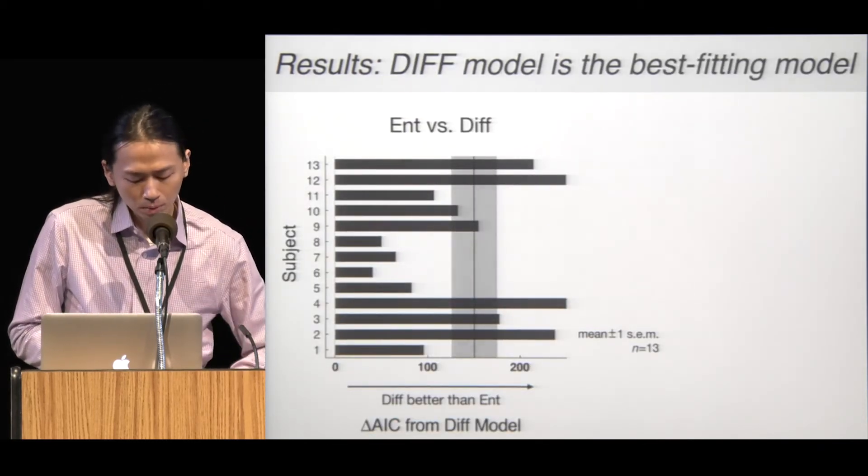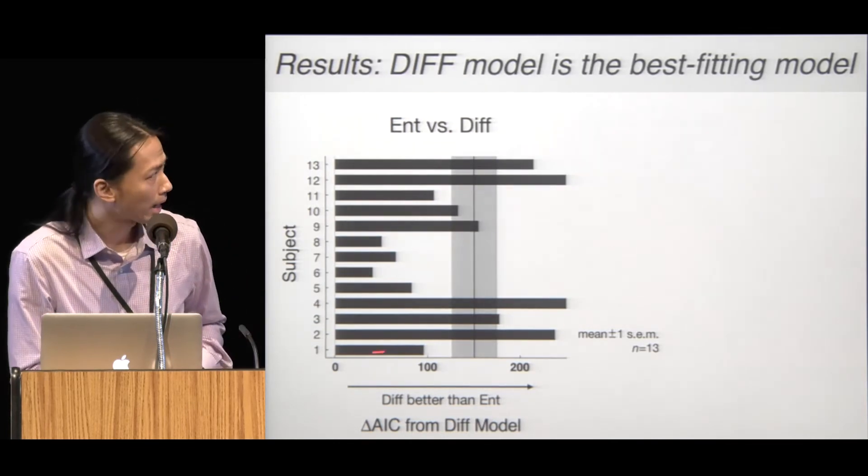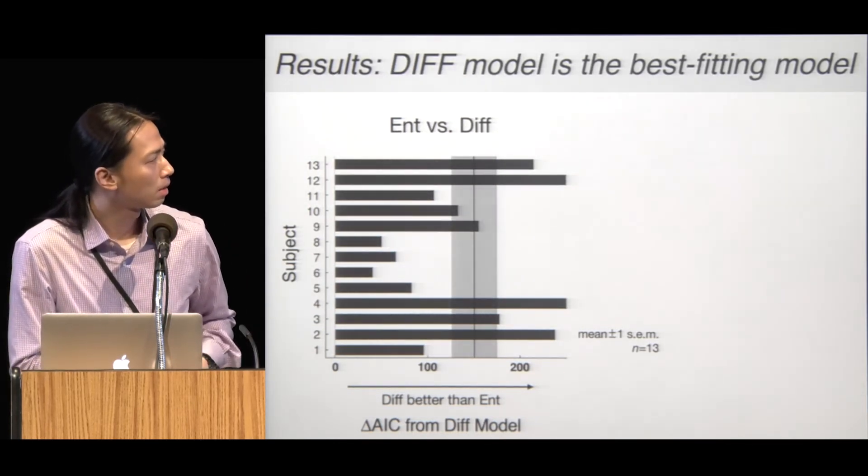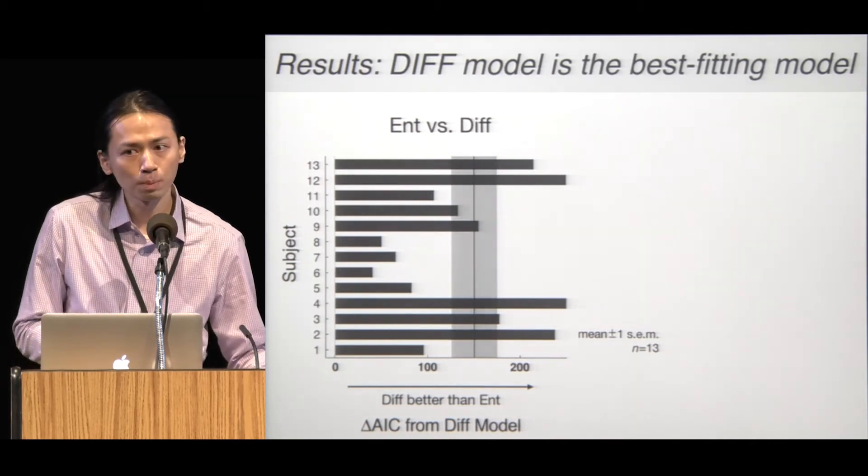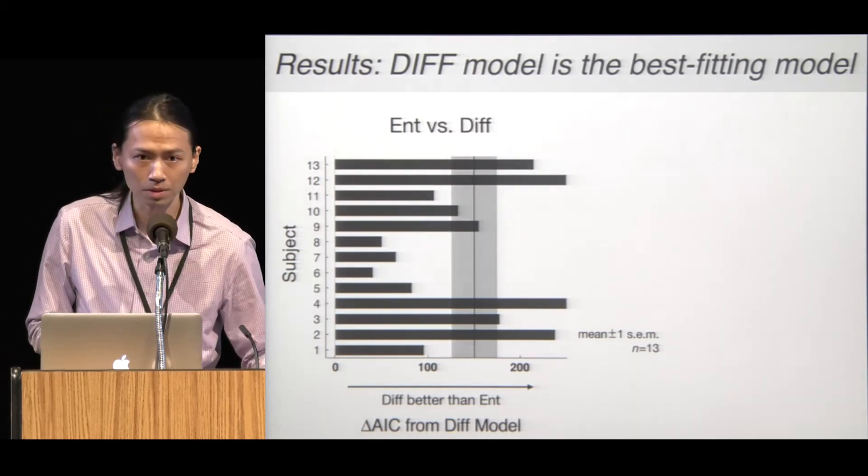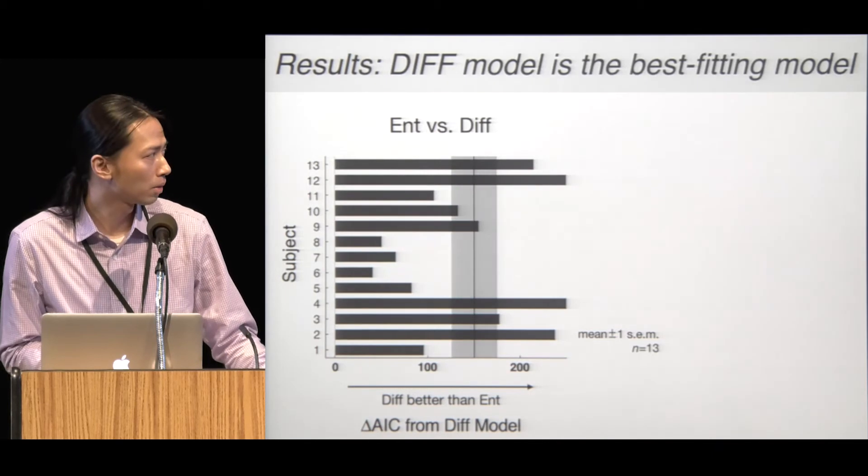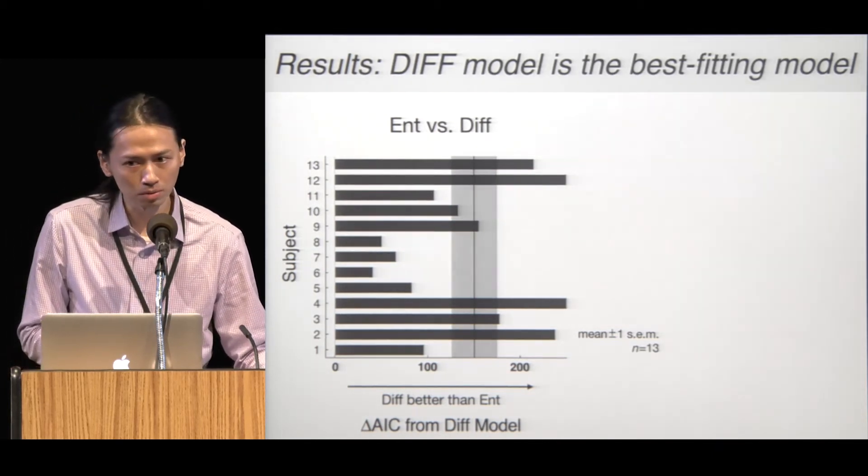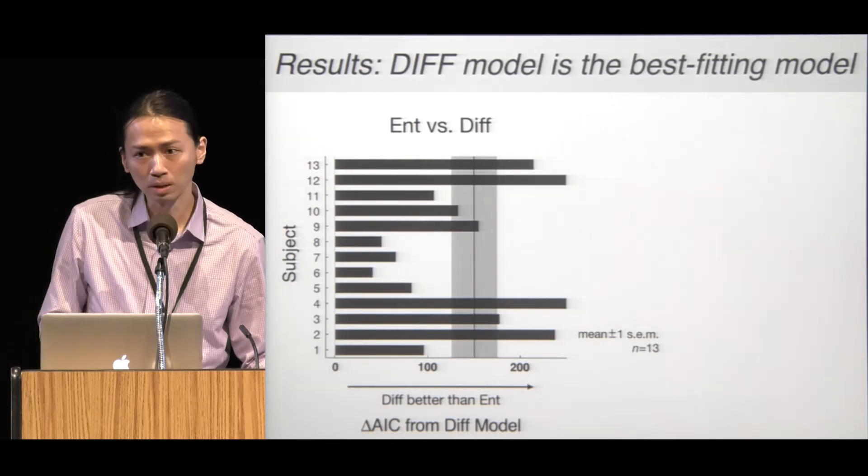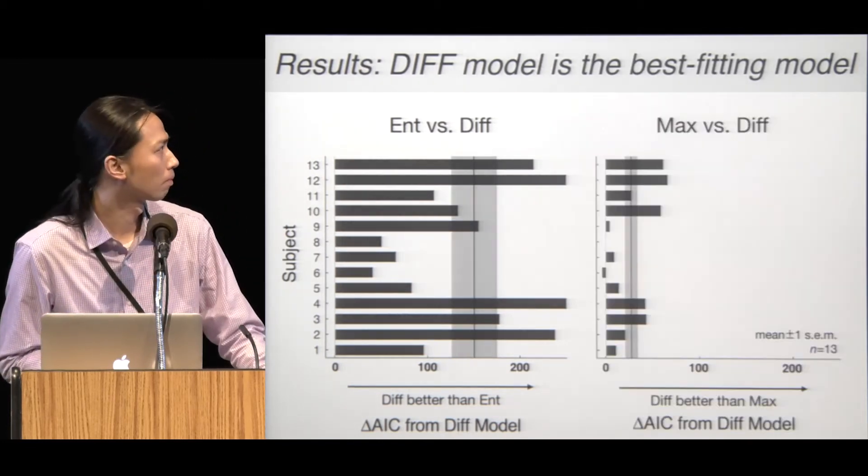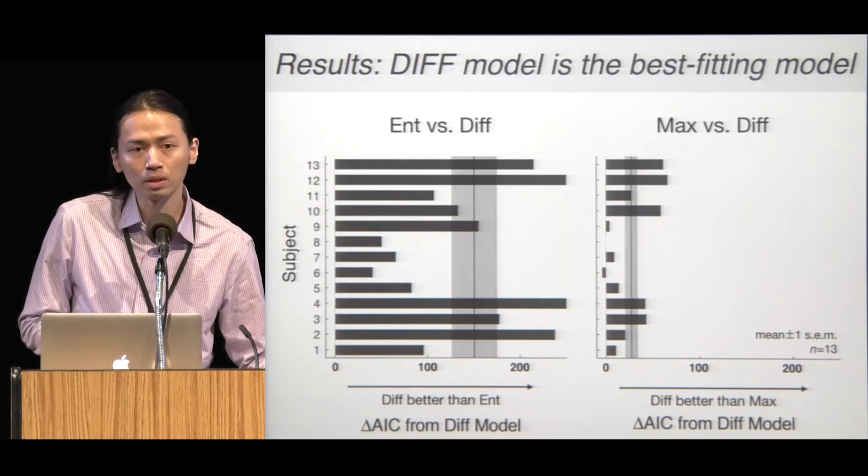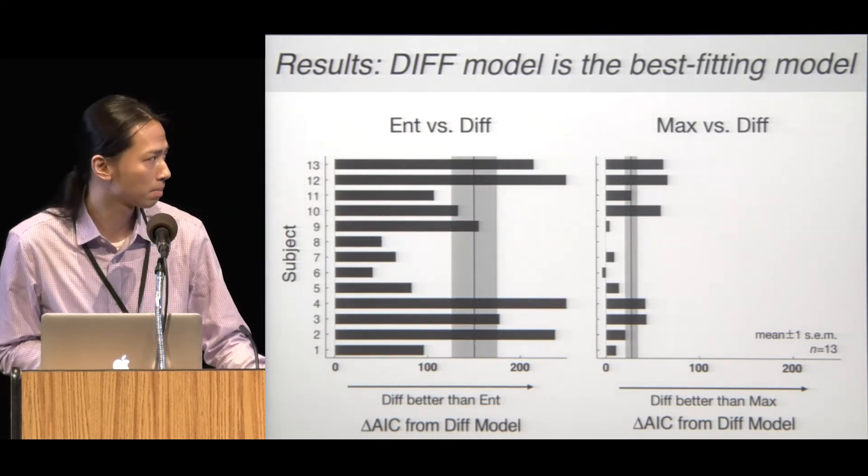We compare the AIC score between the entropy and the difference model. The x-axis is individual subjects. The y-axis is the AIC score of the entropy model minus the AIC score of the difference model. The entropy model has higher AIC score across all individuals, indicating that the diff model is a better model. When we compare the Max model and the diff model, again, we found that the diff model outperformed the Max model.